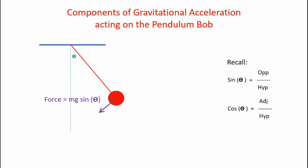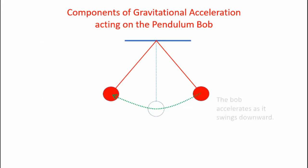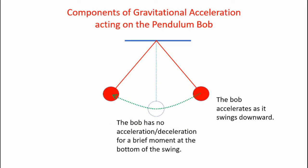It's this perpendicular force that accelerates and decelerates the pendulum bob as it swings. When the pendulum bob starts out it accelerates as it swings downward. At the bottom of the swing it has no acceleration or deceleration, but only for a brief moment as the bob begins to swing upward again. As the bob swings upward it decelerates until it stops, then falls back down towards the vertical.